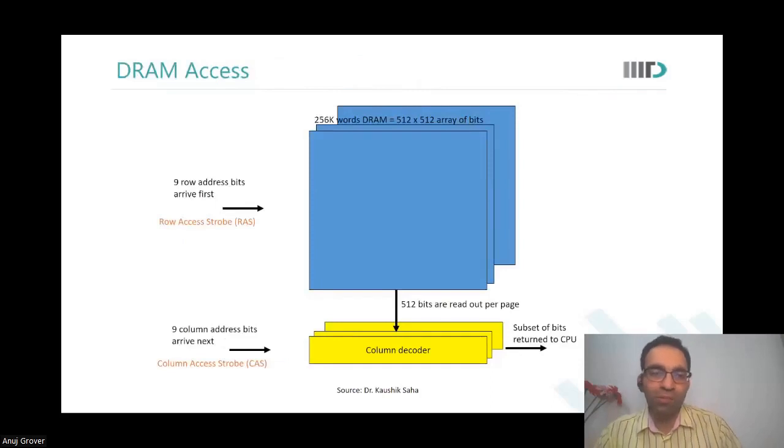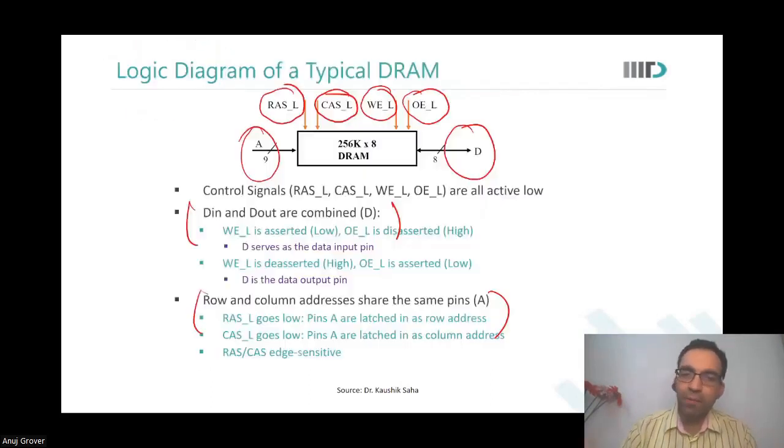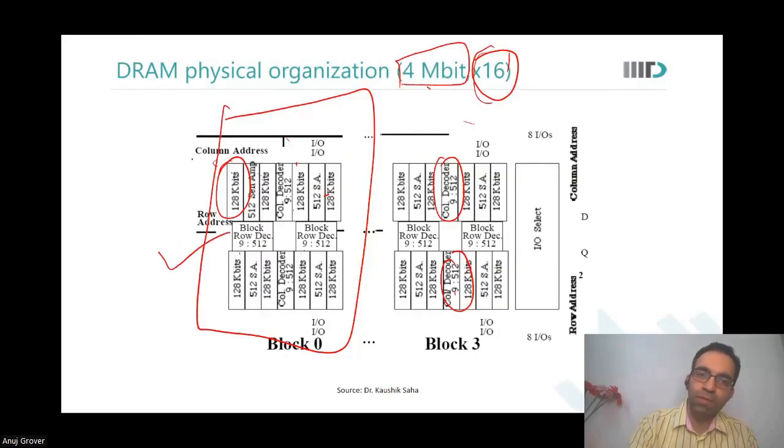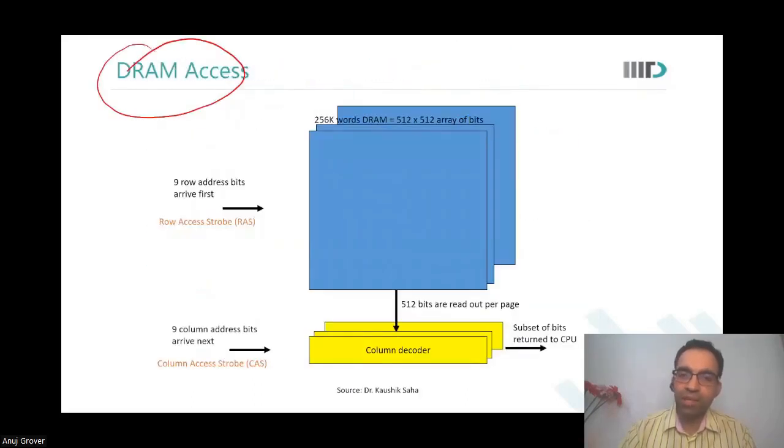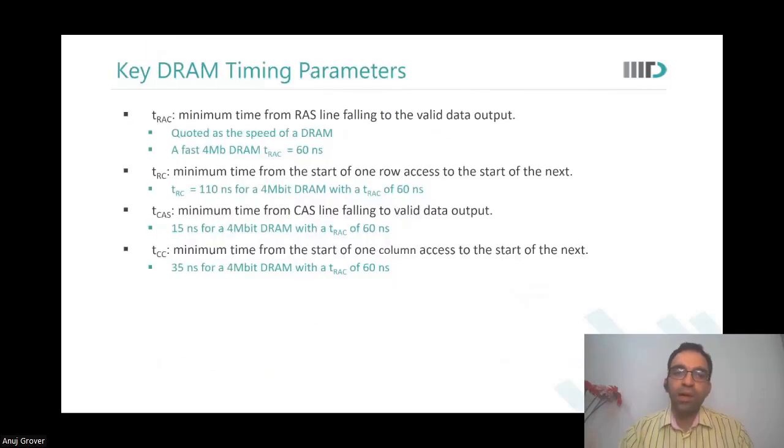DRAMs are usually main memories, they are off chip, so there is a very strong constraint on number of pins that you could have for the DRAMs. And therefore everything is done to reduce the pin out of the DRAM. Okay, 256k words, 512 cross 512 array, this is the logical diagram of this memory. And 512 bits are read out per page. We could say there are 16 pages, so we kind of match that particular memory that we had. And a subset of bits are returned to the CPU. So the column decoders, there are multiple column decoders, and then the subset of these accesses are reported to the CPU.